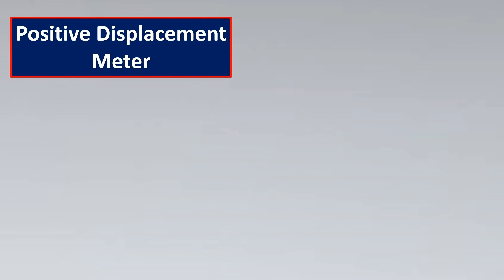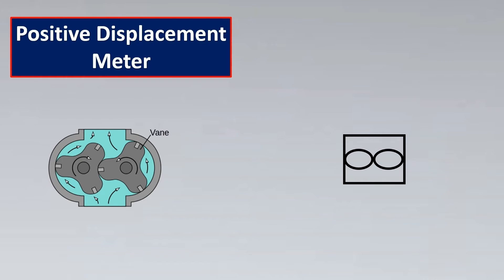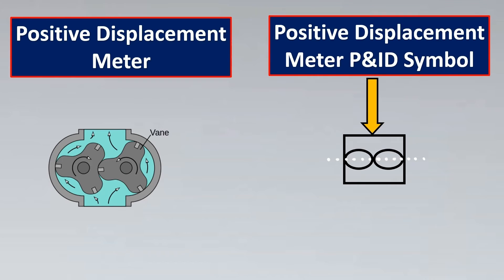Next are positive displacement flow meters. The flow meter looks like a body with vanes, and the P&ID symbol represents this with the vanes shown in the horizontal plane. This is the P&ID symbol for a positive displacement flow meter.